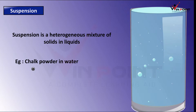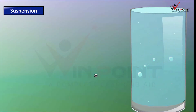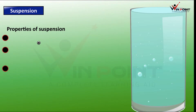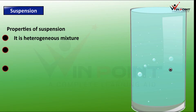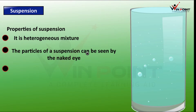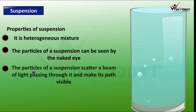The example of suspension is chalk powder in water. Now we can discuss the properties of suspension. First, it is a heterogeneous mixture because the concentration is not the same everywhere. Second, the particles of suspension can be seen by the naked eye — you can see the particles here.